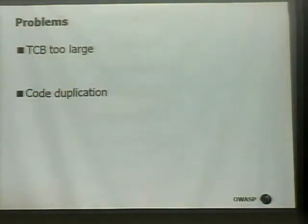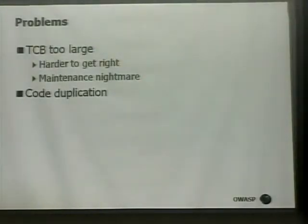So, what are the problems with the architecture as-is? Problem number one is that the trusted computing base is too large. In fact, just about everything ends up being in the trusted computing base. If you want to rely on validation in the web server, you also need to trust that all the subsequent handovers of data flowing through the system preserve integrity. The larger your trusted computing base is, the harder it is to convince yourself that you got it right.